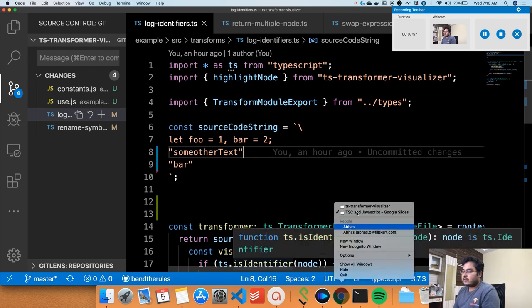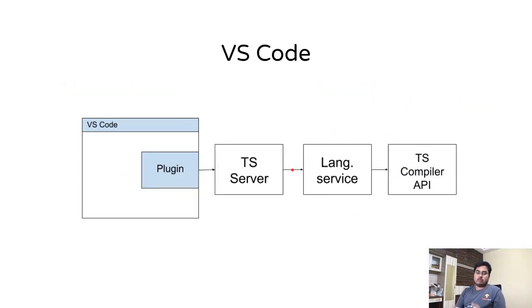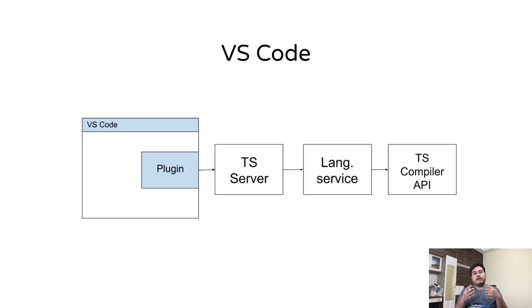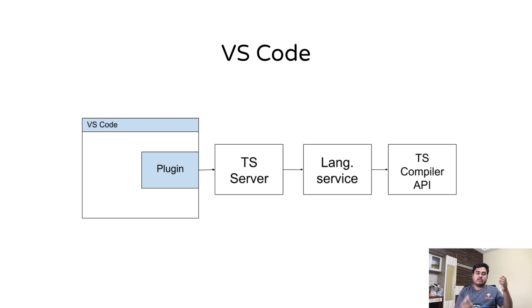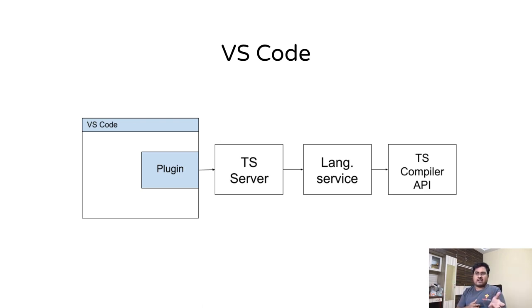If you're already using VS Code, you are actually already using the TypeScript Compiler API. For JavaScript and TypeScript, VS Code has a built-in plugin. For any language it's usually a client-server setup — the plugin runs on the VS Code side, but it also has a corresponding server running on your local machine. It uses the TypeScript compiler and its API. The first step is a TS server, which is just a pass-through layer that forwards requests to the next layer.